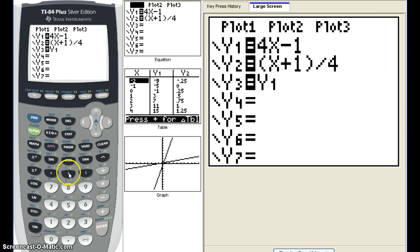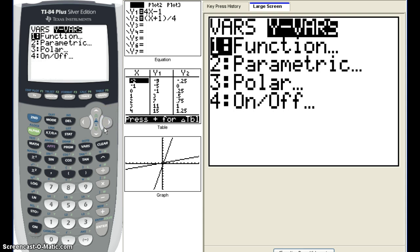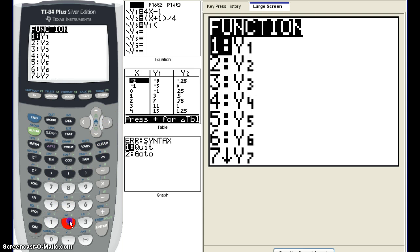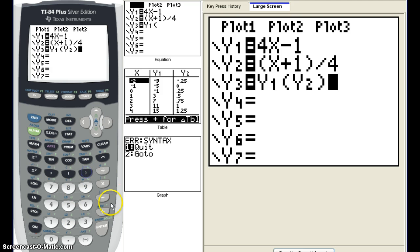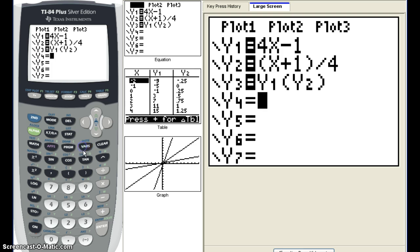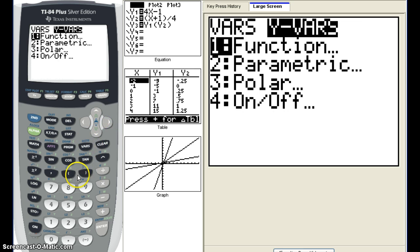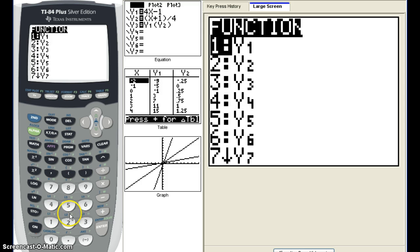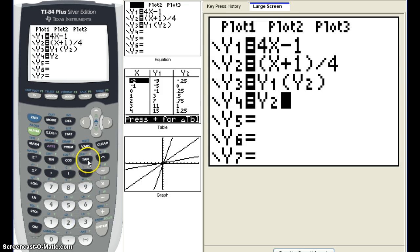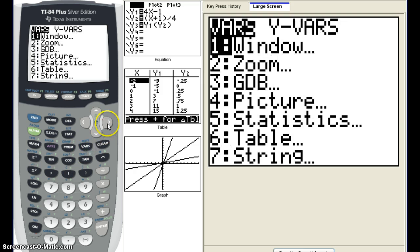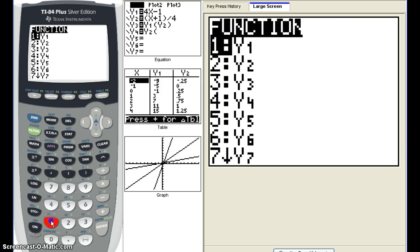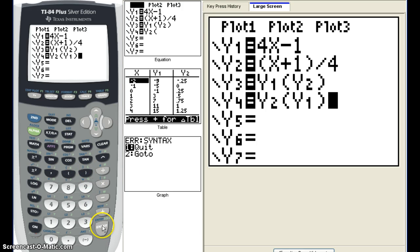Close parentheses. Now we need to do the same thing because we want to substitute Y sub 1 into Y sub 2. Hit variables, go over to Y variables, hit 1 for function. Now we want to take our Y sub 2 and plug in our Y sub 1. Notice how we're doing the same keystrokes over and over. Hit enter.